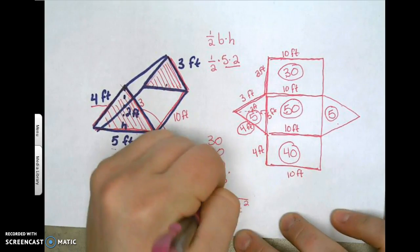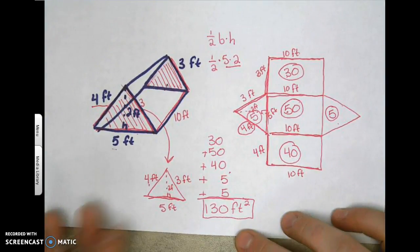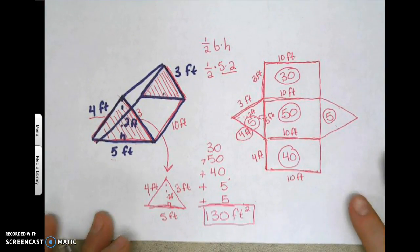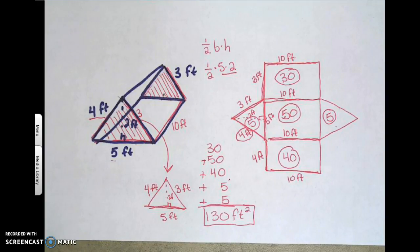Area is always expressed in square units, so that's 130 feet squared. That covers drawing nets of both rectangular and triangular prisms. Labeling is the hardest part, but once you have everything labeled, everything else falls into place.